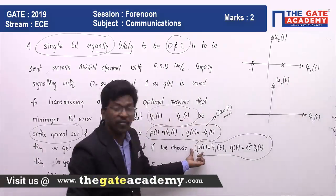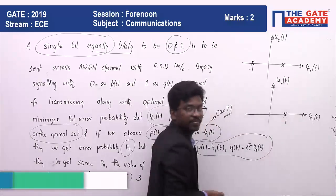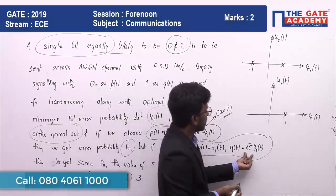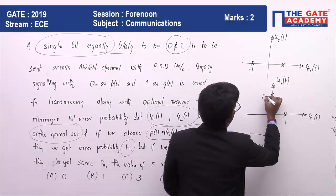For the second case, this is ψ1(t) and this is ψ2(t). P(t) is 1 into ψ1(t), and for Q(t) it is square root of E into ψ2(t), means it is here.